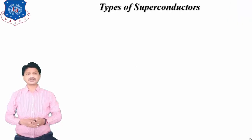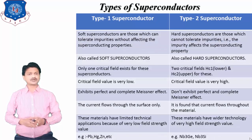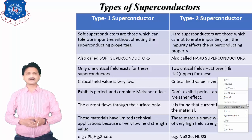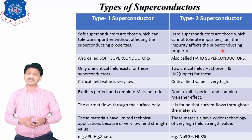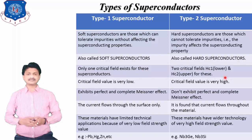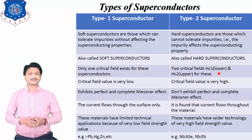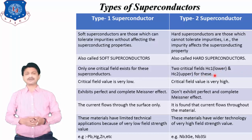Let's see the differences between Type 1 and Type 2 superconductors. Type 1 superconductors are soft superconductors — they can tolerate impurities without affecting superconducting properties. Type 2 superconductors cannot tolerate impurities, meaning impurities affect their superconducting properties. In Type 1, only one critical magnetic field exists, whereas in Type 2, there are two critical magnetic fields: Hc1 (lower critical magnetic field) and Hc2 (upper critical magnetic field).